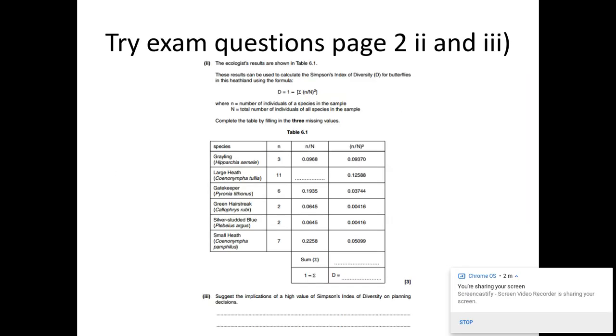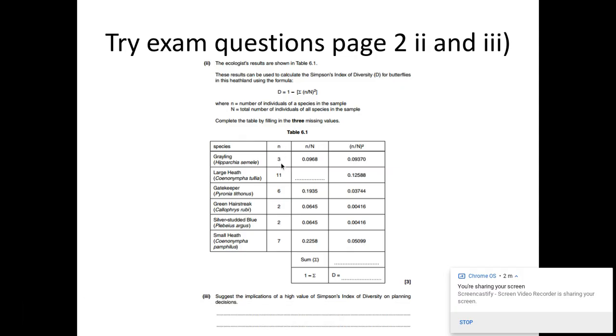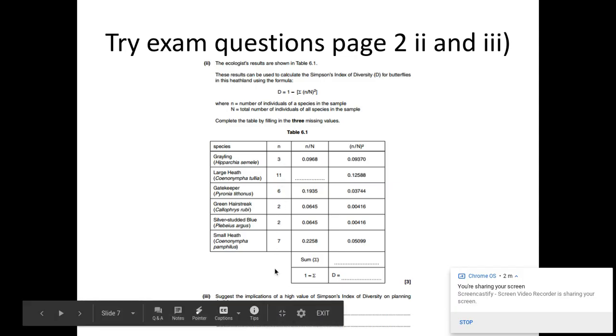So an example of one of these formulas, if you want to pause it and have a go, this is how you should lay it out. So you should have your species down one side, and then you should have n, which is the number of those species. For example, there are three grayling, 11 large heath, etc. You would add them all up, so you've got a total number, which is the big N. And then you would do 3 divided by the big N, 11 divided by the big N, etc., to get this second column.